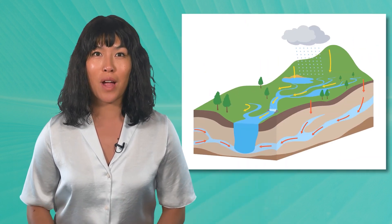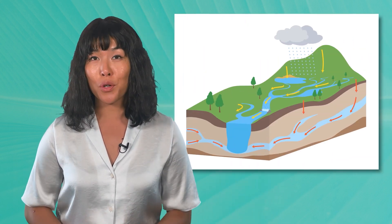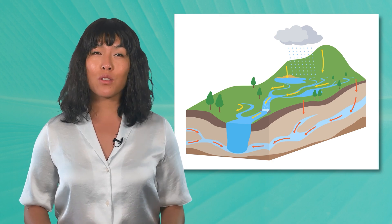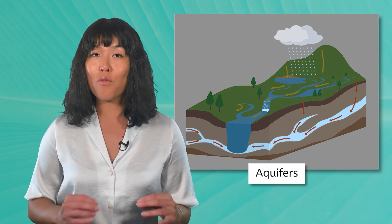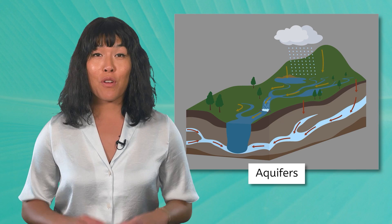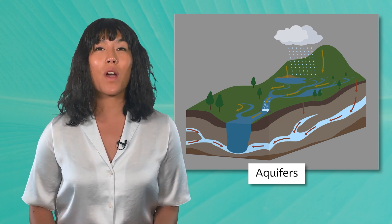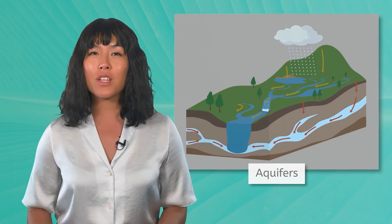However, not all water from precipitation stays on the surface. Some of it infiltrates the ground, replenishing groundwater reserves. Groundwater is stored in aquifers — underground layers of water-bearing rock. From here, it eventually finds its way back to the surface, emerging in springs, or seeping into rivers, lakes, and wetlands, continuing the cycle. In this way, freshwater systems are interconnected, forming a vast network that continually moves and recycles water.